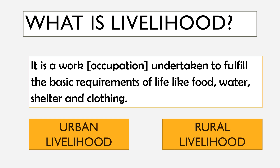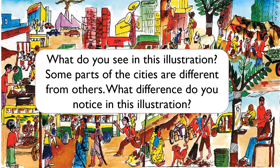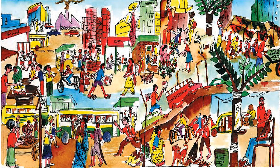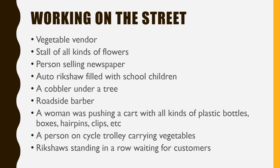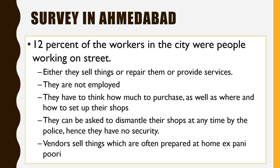There are two types of livelihood: urban livelihood and rural livelihood. You can see a lot of people doing different kinds of work — vegetable vendors, flower stalls, newspaper sellers, auto rickshaws filled with school children, a cobbler under a tree, a roadside barber, a woman pulling a cart with plastic bottles and clips, a person on a cycle trolley carrying vegetables, and rickshaws waiting for customers.